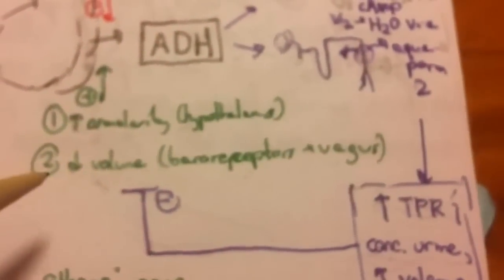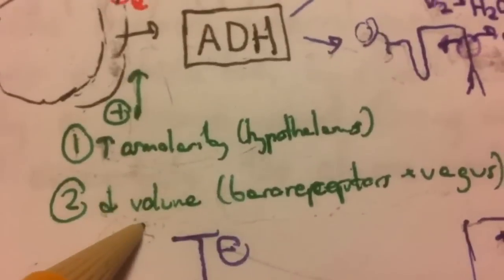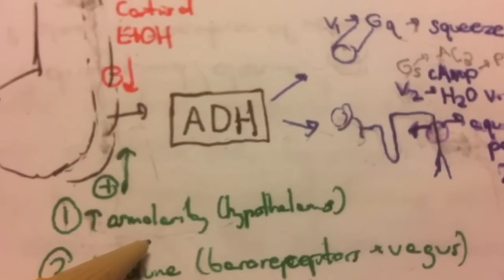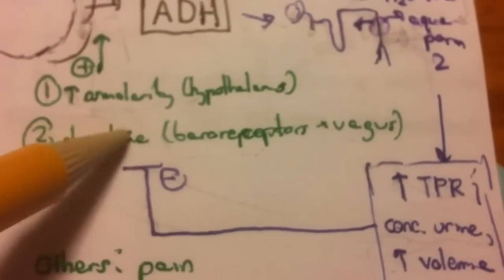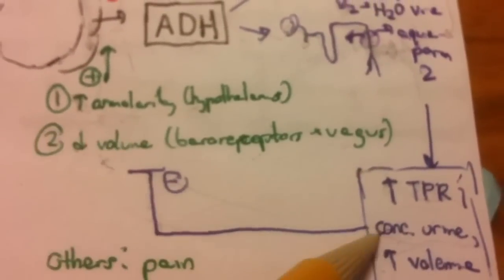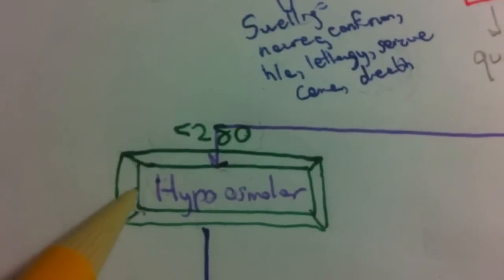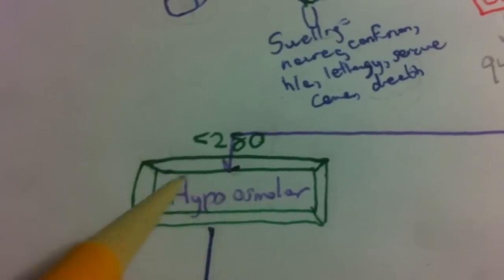In our case of hypovolemic hyponatremia, volume is down and this effect is overriding any negative feedback from having the urine be concentrated — because we can already see that osmolality is low. Osmolality is low in all of these situations.